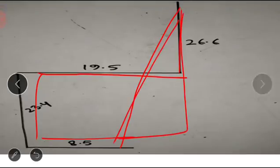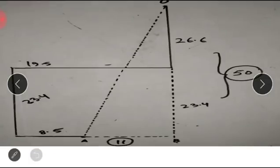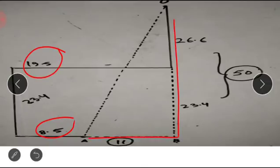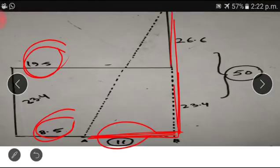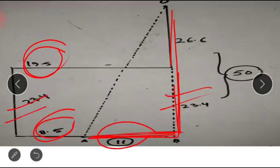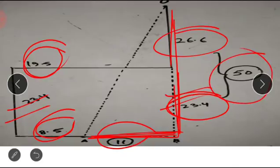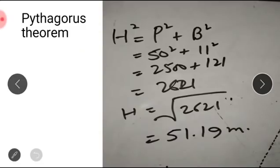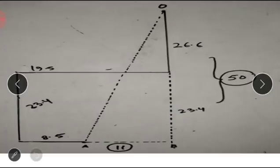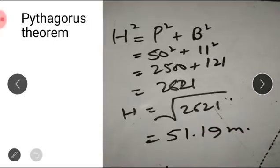We form a triangle. This is 8.5, this is 19.5, so the remaining distance is 19.5 minus 8.5, which equals 11. The vertical distance is 26.6 plus 23.64, which totals 50. So our perpendicular is 50 and our base is 11. We'll use Pythagoras theorem: hypotenuse squared equals perpendicular squared plus base squared, so 50 squared plus 11 squared.